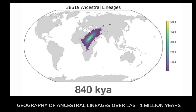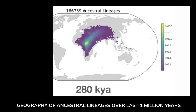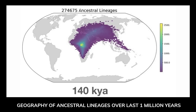In layman's terms, the comprehensive tree depicts how people all over the world are connected. Essentially, we are reconstructing our ancestors' genomes and using them to form a vast network of relationships. We can then estimate when and where these ancestors lived, stated lead author Dr. Anthony Wilder-Wohns of the Massachusetts Institute of Technology and Harvard University. The research team concentrated on DNA segments that vary from person to person, identifying 6,412,717 gene variants and attempting to determine when and where each one originated.